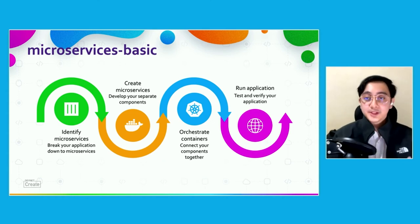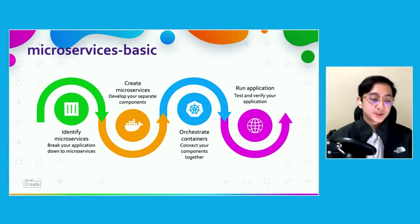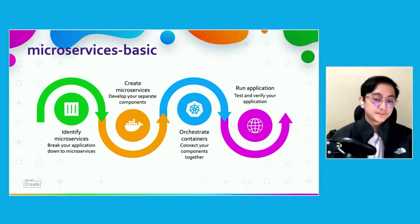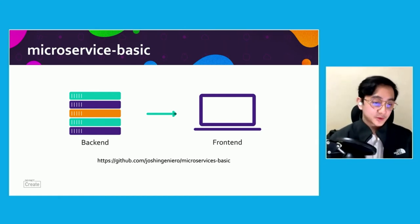The third step is orchestrating your containers — deciding which containers connect to which and how users access your application. The fourth step is running your application so you can verify, test, and see if changes are being reflected. The simplest infrastructure for this demo is a backend serving information to a frontend. This is in a GitHub repo which we'll share later on — let's get started with the actual demo.